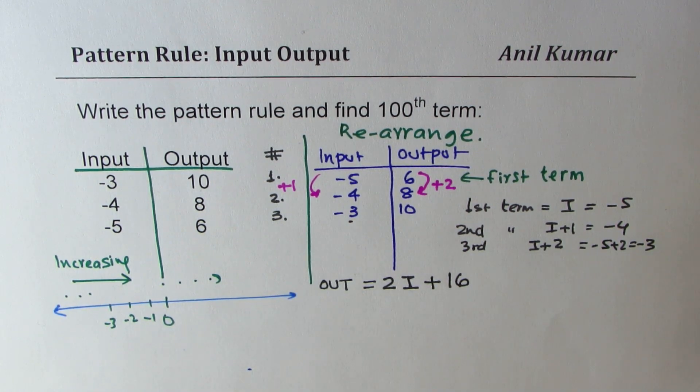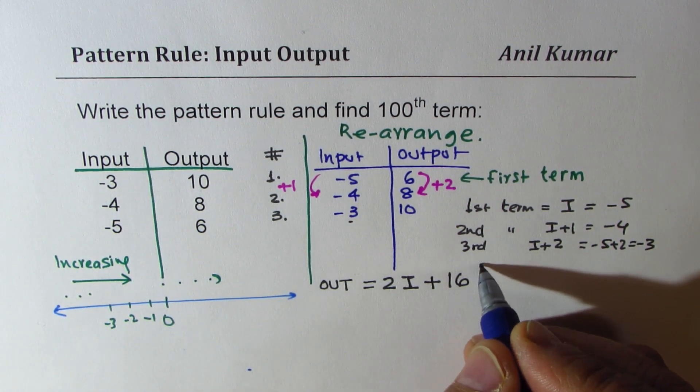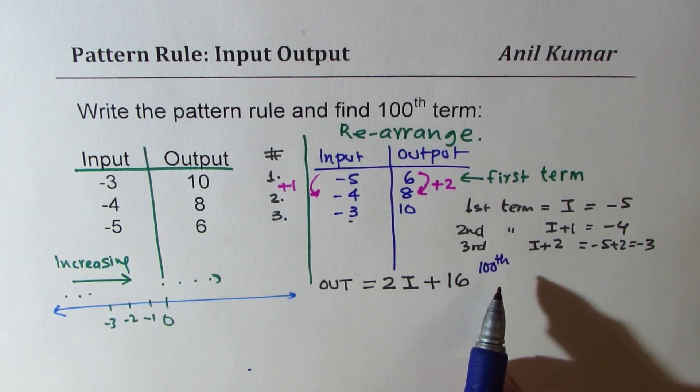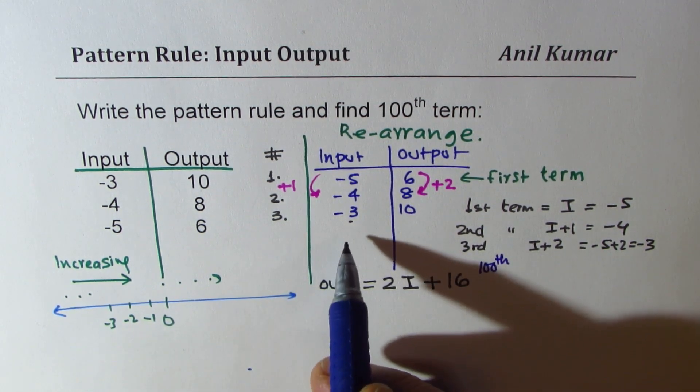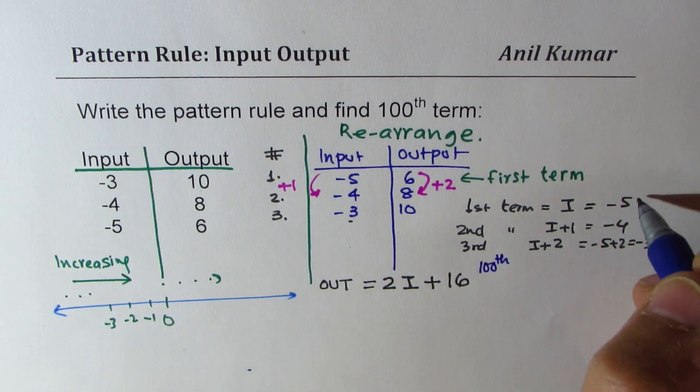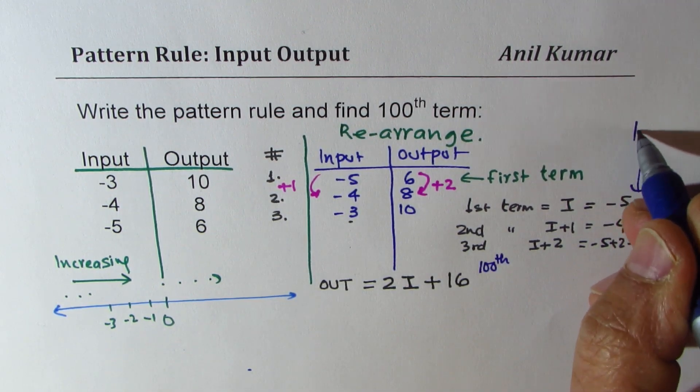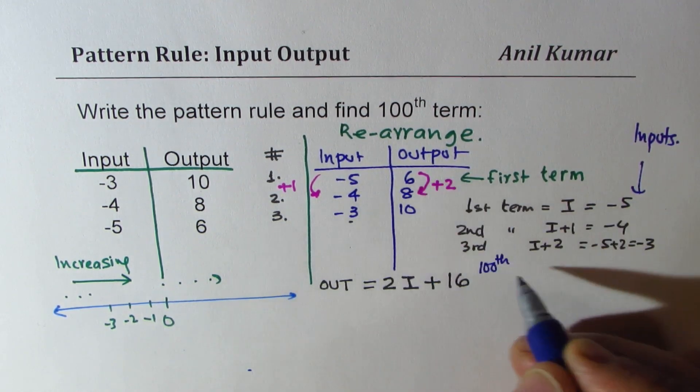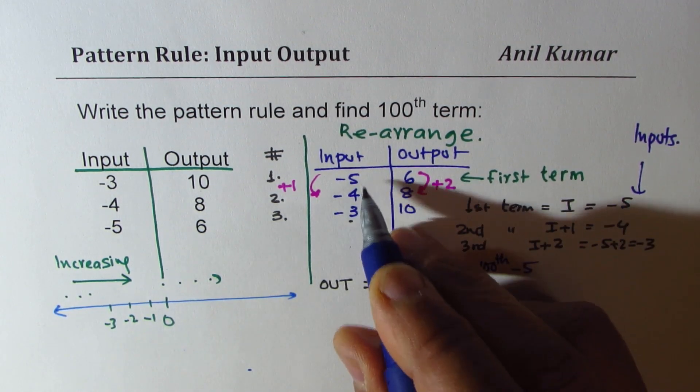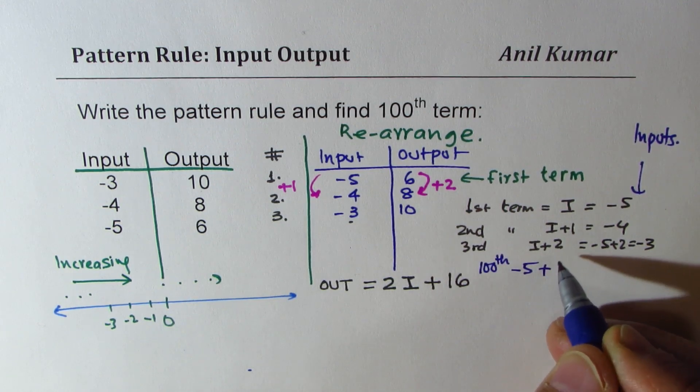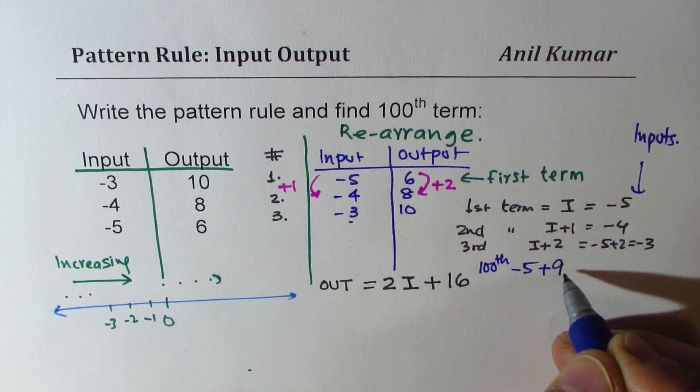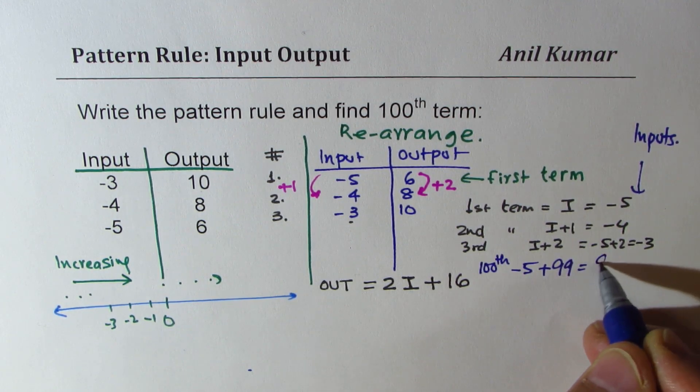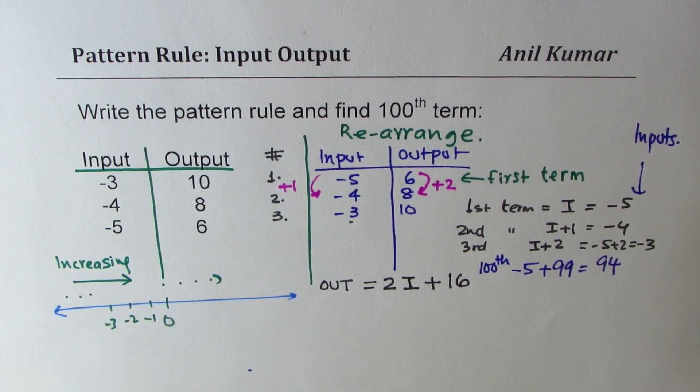So what is going to be my hundredth term? So in hundredth term what is going to be my input? For hundredth term it will be minus five the first term plus one less than hundred which is 99. So I have to take away five from 99, I get 94.